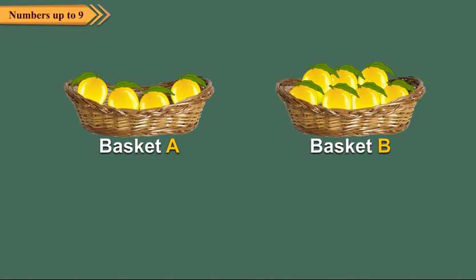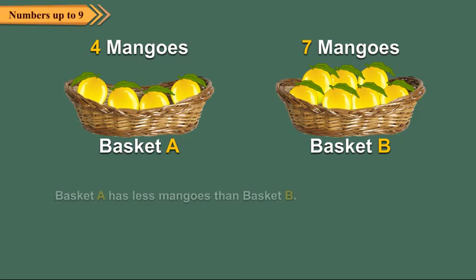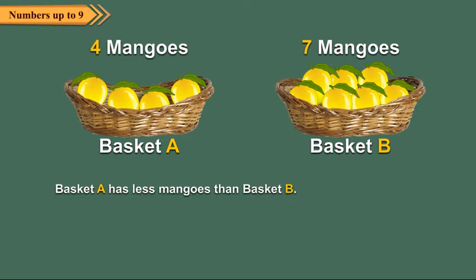Now, look at these baskets full of mangoes. Basket A has four mangoes. And basket B has seven mangoes. Also, we say that basket A has less mangoes than basket B. Or we say basket B has more mangoes than basket A.